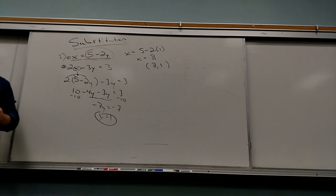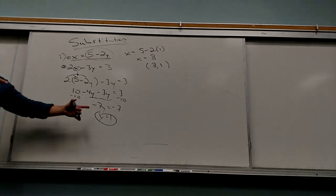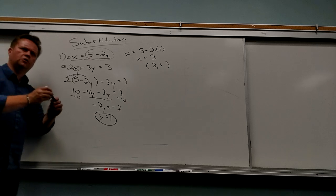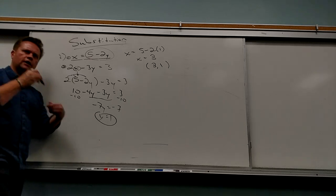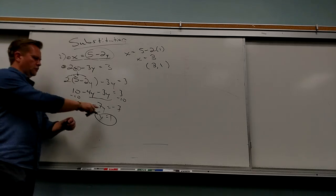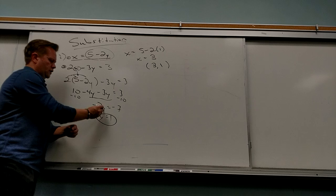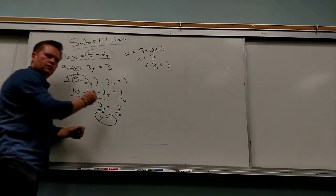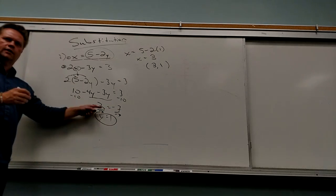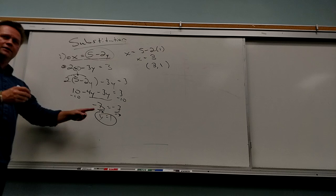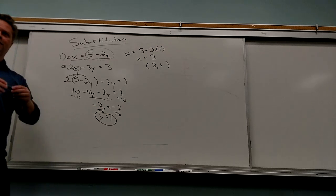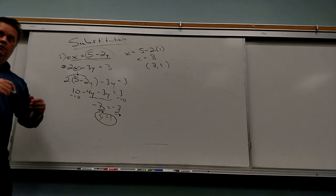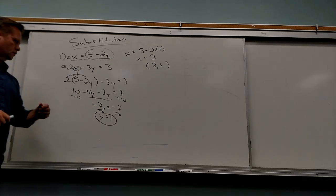For the negative 7Y equals negative 7 — should I divide? Of course you divide. You have to. How do you get Y by itself? Yeah, you divide by negative 7. Yeah, it's the only way to get that last step.